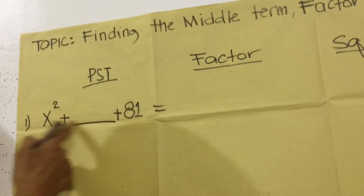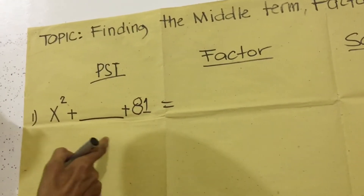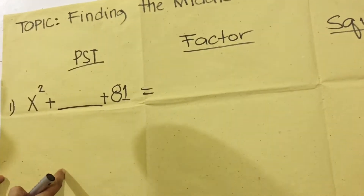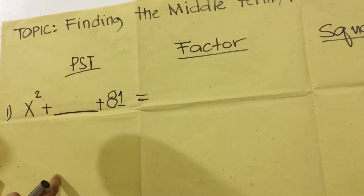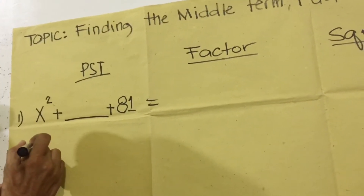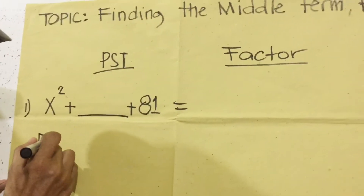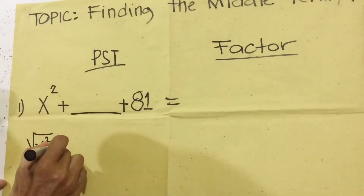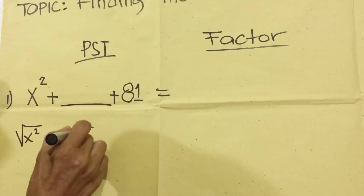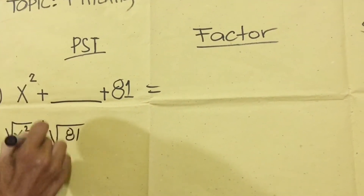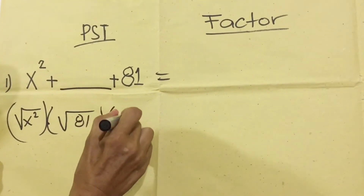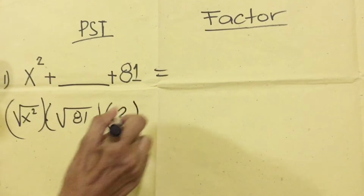The square root of 81 is 9, so it's a perfect square. That's why it is called PST — perfect square trinomial. To find the middle term, we're going to take the square root of the first term times the square root of the last term, then times 2. The 2 is a constant — it is always 2.